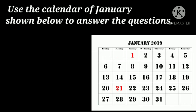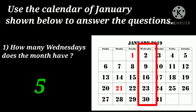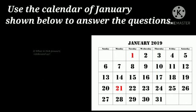Now let's see the next one. Use the calendar of January shown below to answer the questions. The first question is: how many Wednesdays does the month have? First we will search the Wednesday column. How many Wednesdays are there — one, two, three, four, five. So there are five Wednesdays in this month.